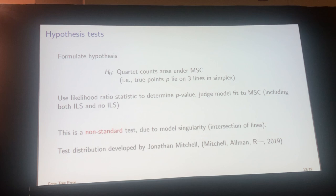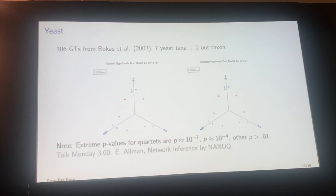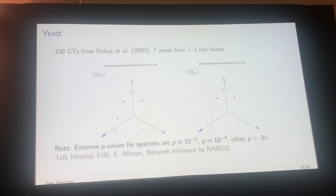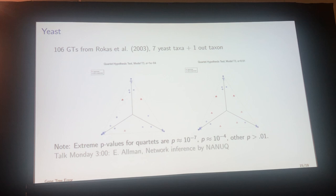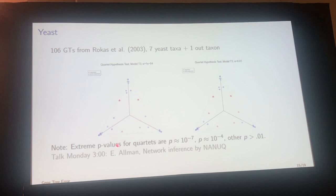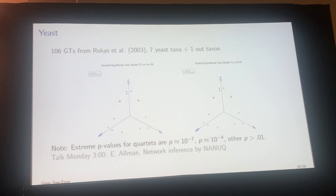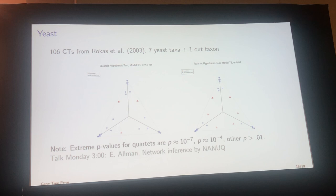A few empirical examples. The first is a yeast data set — a subset from the Rokas paper, seven yeast plus one outgroup. This is a relatively small data set with only 116 gene trees. What you see is some points on the lines and other points pretty far away. The blue points all have large p-values under the test. The red points in this data set have been hypothesized by others, and by us, as signs of hybridization or other gene flow.